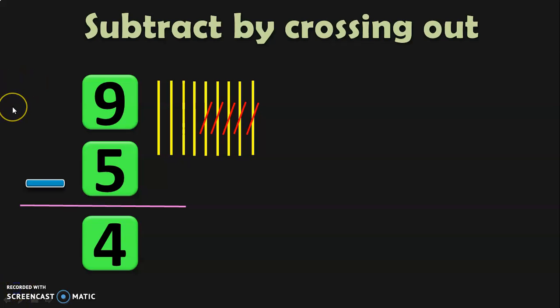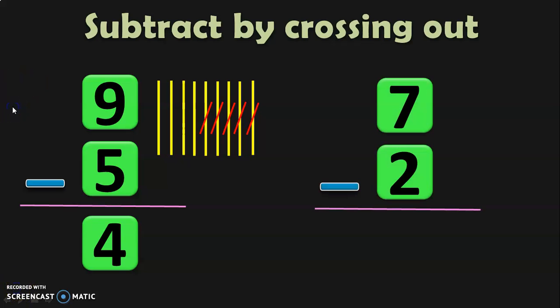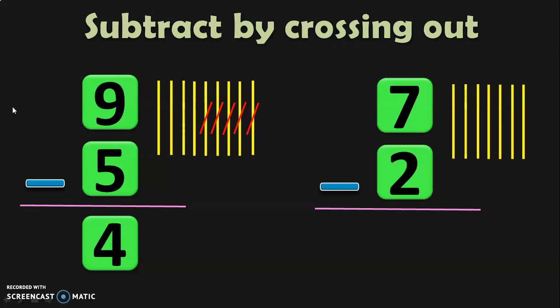Let us do one more example to revise this concept. 7 minus 2 — represent 7 in the form of 7 lines. Now we have to subtract 2, so cross out 2 lines. The remaining number of lines is 1, 2, 3, 4, 5. So the answer for 7 minus 2 is equal to 5.